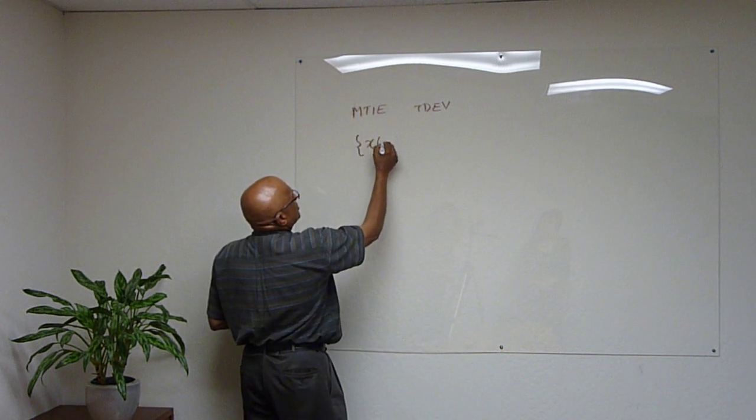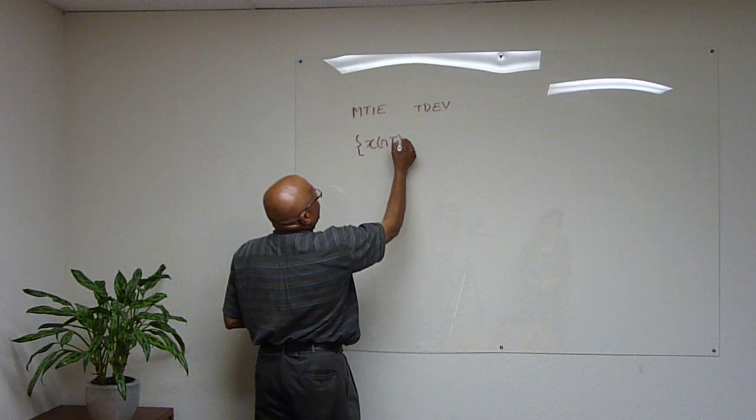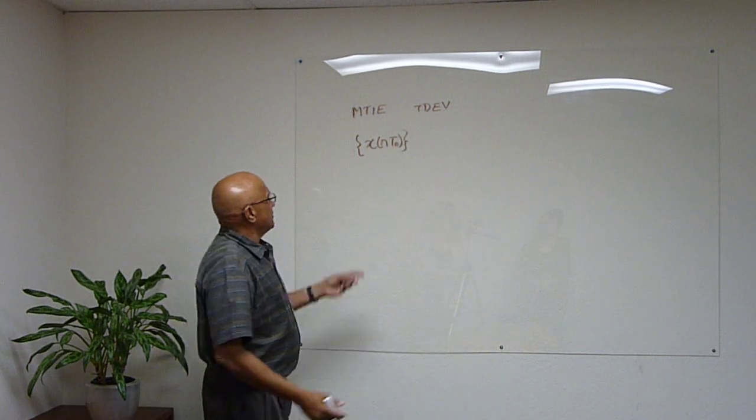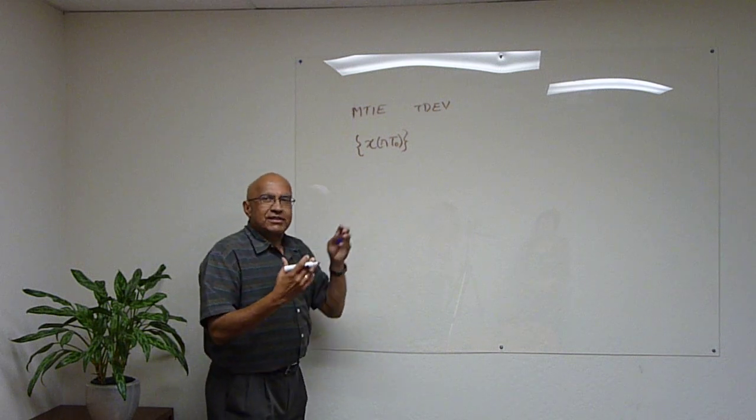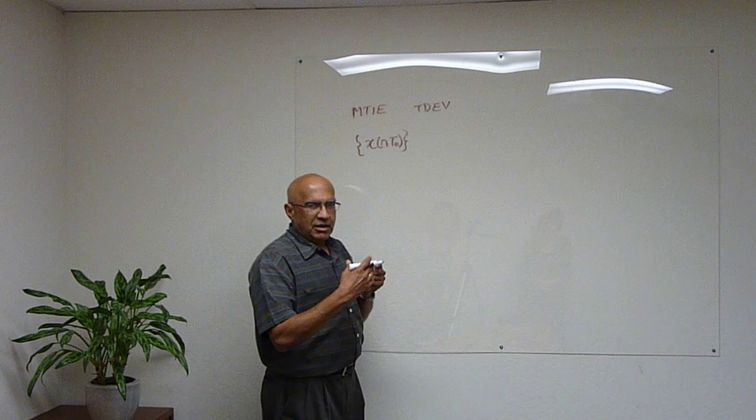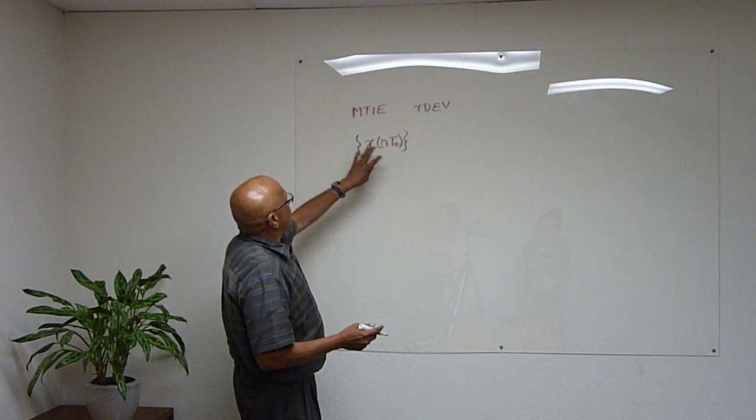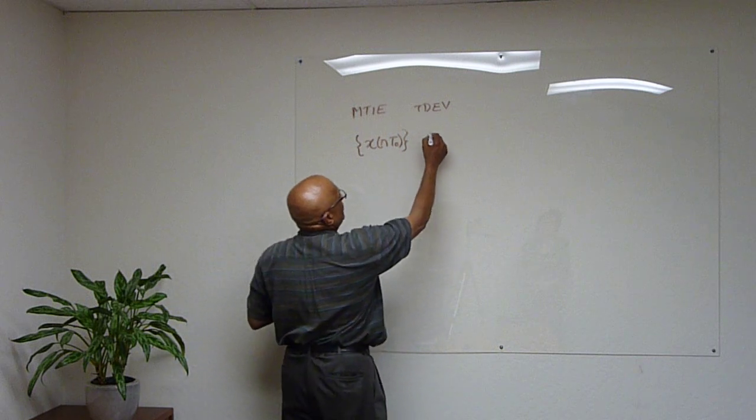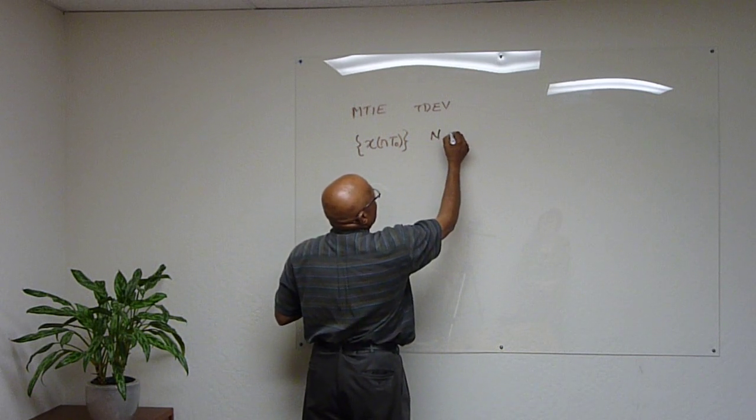We start off with some notion of the time error sequence, which is a sequence of numbers, and implicitly they are taken every t sub zero units of time apart. Now let's assume that we've done a measurement. We've got this time error sequence and we've got N samples.